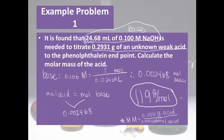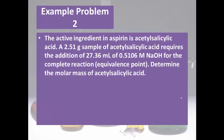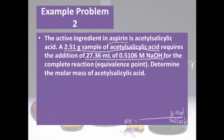Let's do another example with a real-life product. The active ingredient in aspirin is acetylsalicylic acid. A 2.51 gram sample of acetylsalicylic acid requires the addition of 27.36 milliliters of 0.5106 molar NaOH for complete reaction to the equivalence point. We're going to determine the molar mass, so again I'll note that molar mass equals grams over moles for the acid, and the gram sample is 2.51 grams.